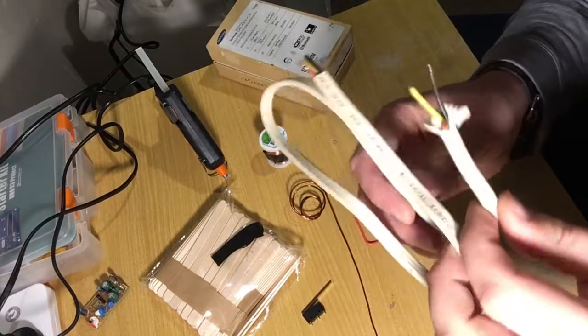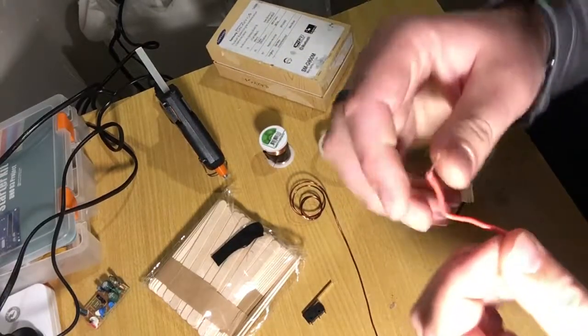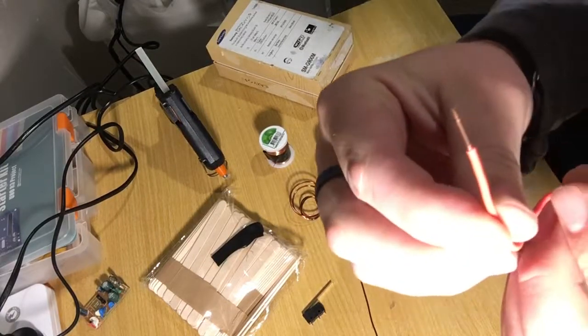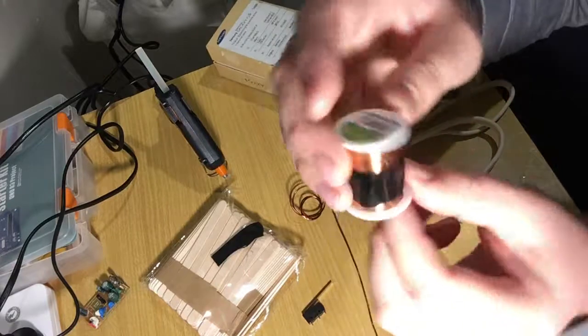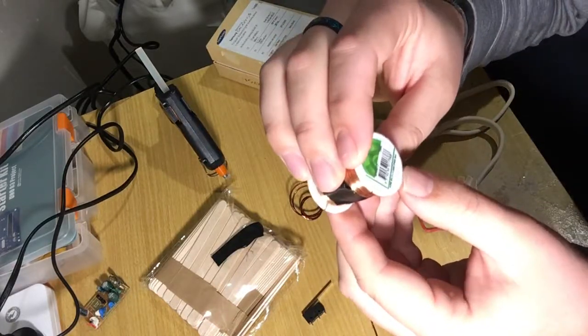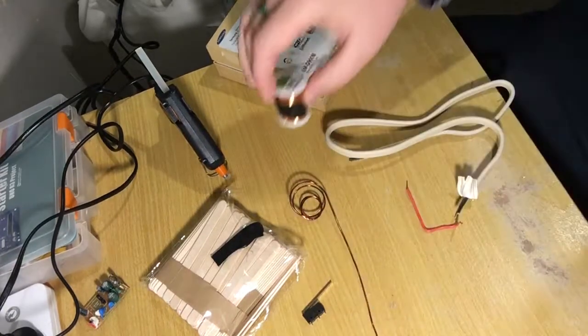You're going to need some old electrical wire, single core with insulation like this that you can peel back. Some very thin wire that's coated. This is 0.3 millimeters.